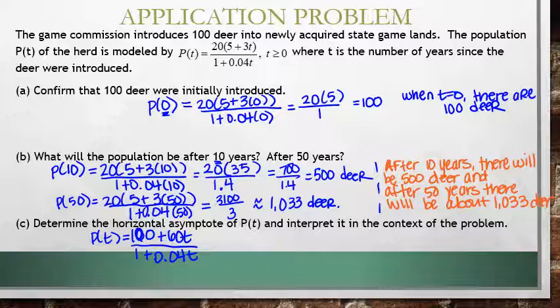So the degree on top—remember, degree is the highest exponent—in this case it's going to be 1. So the degree on top is 1 and the degree in the denominator is also 1. To find that horizontal asymptote, that's going to be dividing the leading term on top by the leading term on bottom.